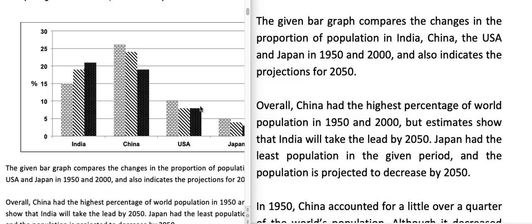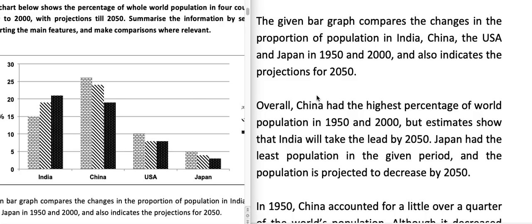The sample answer goes like this: 'The given bar graph compares the changes in the proportion of population in India, China, the USA, and Japan in 1950 and 2000, and also indicates the projections for 2050.' If you write 'compares the changes from 1950 to 2050,' it would be wrong because 2050 has yet to come. So you should mention the past years separately and then indicate projections for 2050.